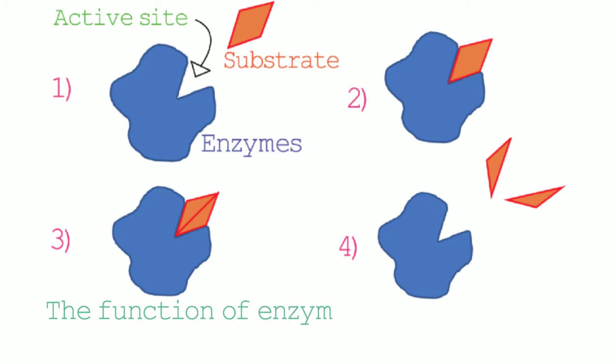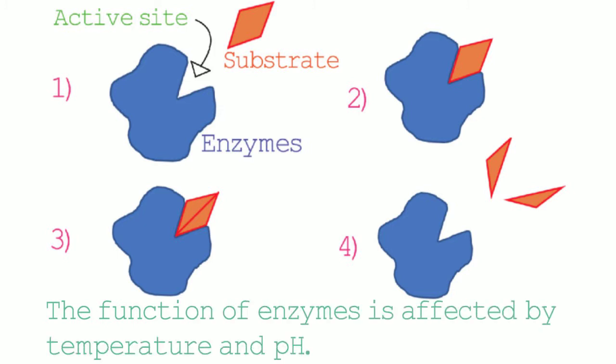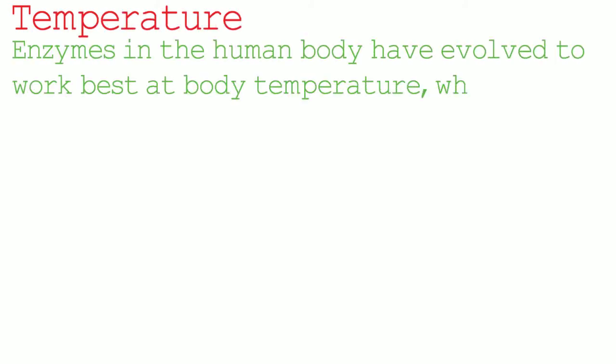The function of enzymes is affected by temperature and pH. Let's first have a look at temperature. Enzymes in the human body have evolved to work best at body temperature, which is 37 degrees. At this temperature the rate of reaction is at its greatest, and we say that the enzyme's optimal temperature is 37 degrees. A temperature above or below 37 degrees results in a lower rate of reaction.